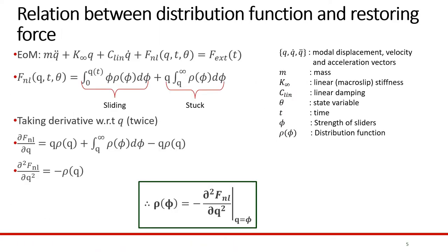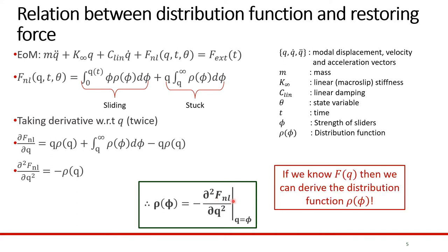We can obtain a relationship between the distribution function and the restoring force. If we consider the equation of motion of the non-linear mode with the non-linear restoring force written as a sum of the force due to the sliders that have slipped and those that are still stuck, and then take two derivatives of this non-linear restoring force and evaluate those derivatives at q equals phi, ultimately we can get the distribution function in terms of the non-linear restoring force. This means that if we know what the restoring force is, then we should be able to derive the distribution function from it.